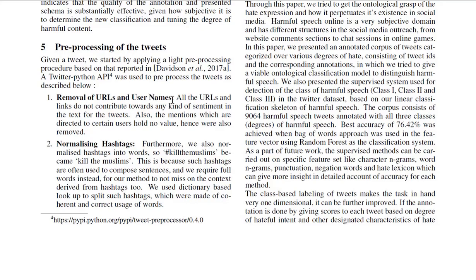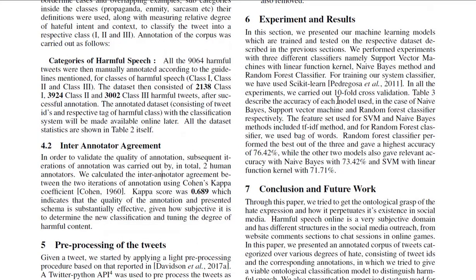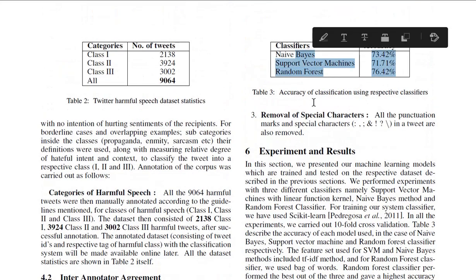For pre-processing, they removed URLs and usernames, normalized hashtags, and removed special characters. In the experiments and results section, machine learning models were trained and tested on the dataset. They tested SVMs with linear kernels, Naive Bayes, and Random Forest using scikit-learn, with 10-fold cross-validation. SVM and Naive Bayes used TF-IDF features, while Random Forest used bag of words. Random Forest performed best at 76.42% accuracy, while the others achieved 73.4% and 71.71%.